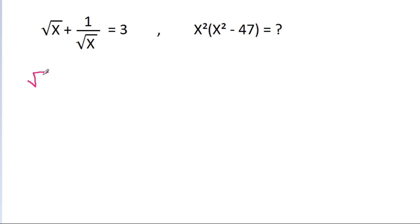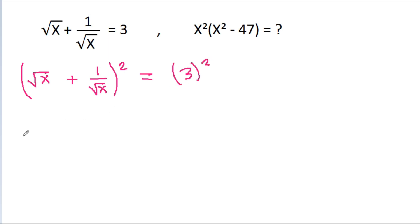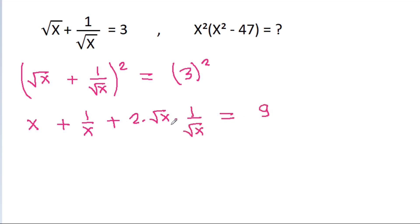So we have root x plus 1 by root x is equal to 3. If we square both sides, then we will get x plus 1 by x plus 2 times root x times 1 by root x is equal to 9, and root x will get cancelled. So x plus 1 by x will be equal to 9 minus 2, which is 7.